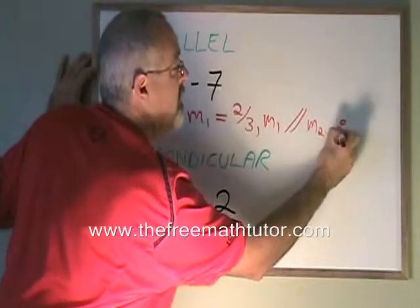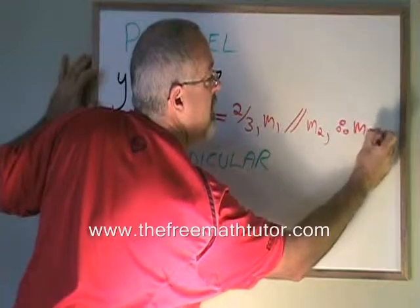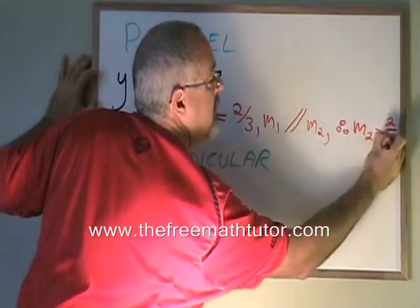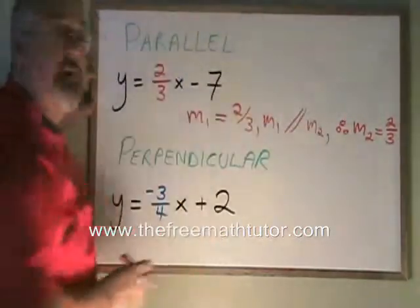Therefore, the slope of line 2, m2, will also be equal to 2 thirds. This statement is called the justification.